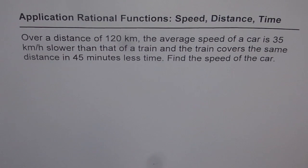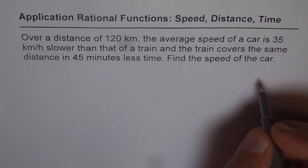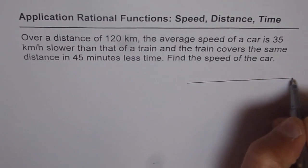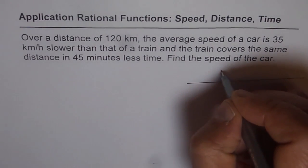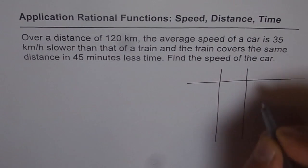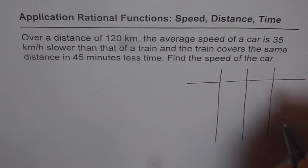Whenever you have a speed, distance, time question, it's a good idea to make a table and see how they are related. From the table you can get your equations also. So let's make a table here. We can make three columns: one for distance, one for speed, and one for time.